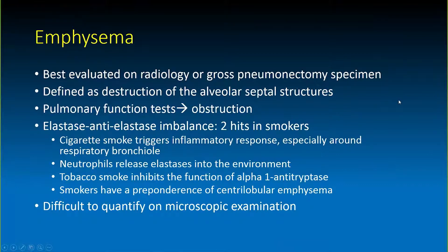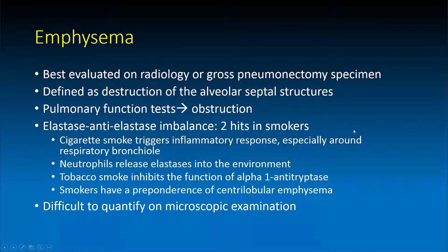Biologically, emphysema is related to an imbalance in the elastases and anti-elastases within the lungs. There are essentially two hits in smokers which contribute to this imbalance. Firstly, cigarette smoke triggers an inflammatory response that may be concentrated in particular around the respiratory bronchiole. This leads to recruitment of neutrophils and macrophages into the environment, which can lead to increased levels of elastases in that local environment.